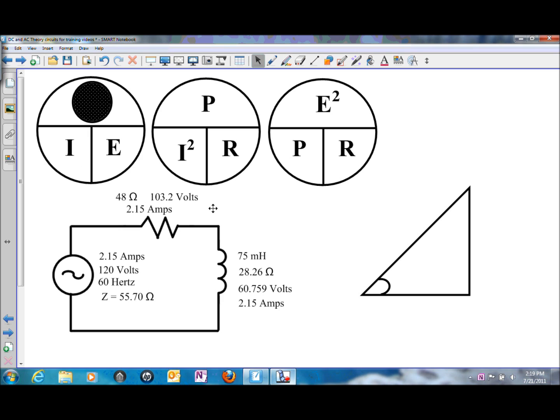For instance, if we wanted to solve for power through the resistor using I times E, we could use the 2.15 amps of current flow times the 103.2 volts of resistive voltage, and that will give us power through the resistor. We could use I squared times R. For instance, power through the inductor: 2.15 amps squared times 28.26 ohms of inductive reactance would give us power through the inductor.